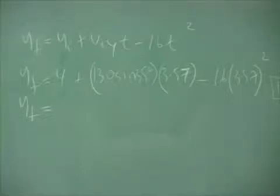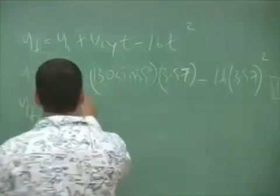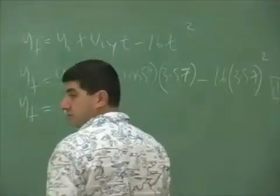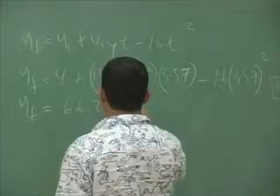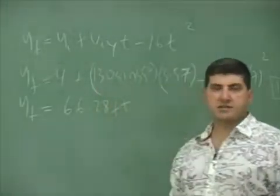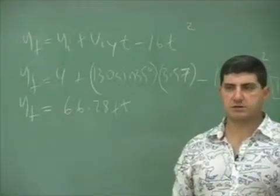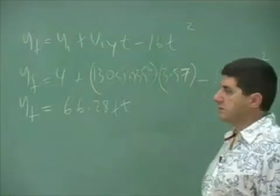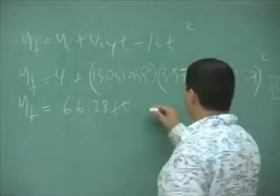66? Okay. Therefore, it's a home run, right? 66.28 feet. So it clears the fence by about 36 feet, right? 66 minus 30. So it's a home run then.